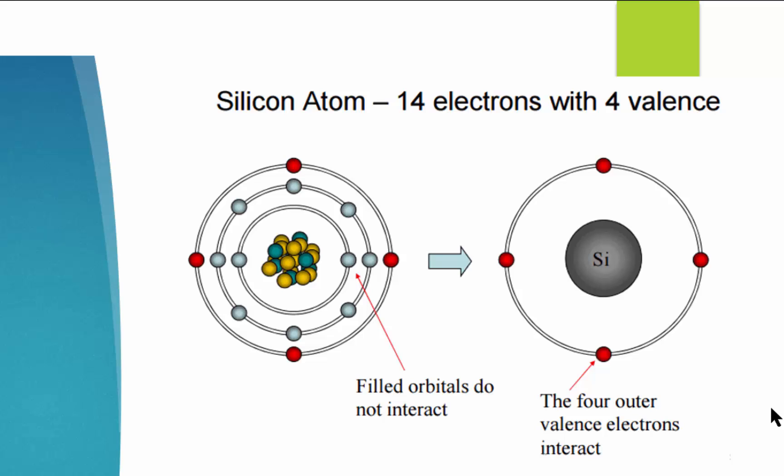The combination of 10 inner electrons and the nucleus is called the core and is represented by a circle. The four valence electrons are represented by four dots around the core.